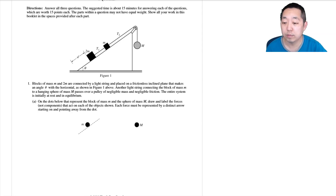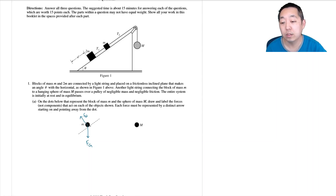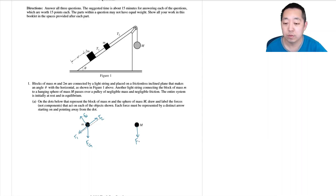Since the surface is frictionless, mass m has gravity acting on it and a normal force perpendicular to the incline surface. It also has tension T1 from the rope and T2 pulling up the incline. Big M just has its force of gravity and T2 pulling up on it, and that should be it.